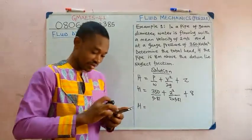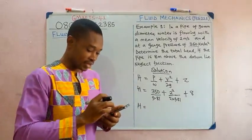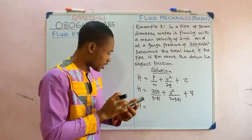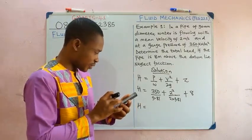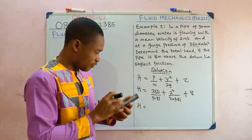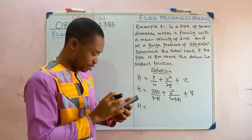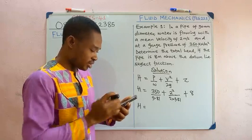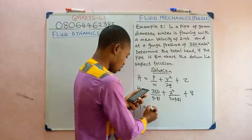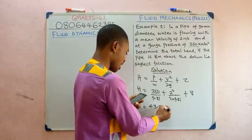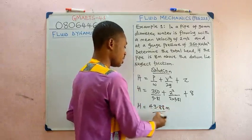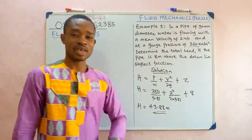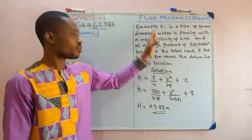Punching 350/9.81 + 4/(2×9.81) + 8 into the calculator gives a total head of 43.88 metres. That is the total head for this problem.